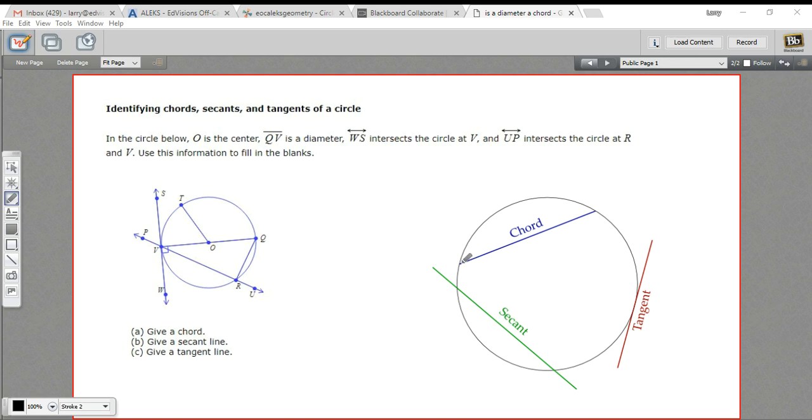A chord, you may have seen before, it's a line segment that has endpoints on sides of the circle. So any line segment you draw that touches both sides of a circle is a chord.